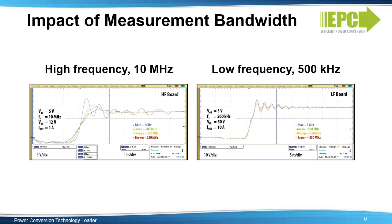When evaluating an EGAN-based converter such as a half bridge, typical waveform measurements of the drain and gate include rise and fall times, peak overshoot, undershoot, and overshoot ringing frequency.